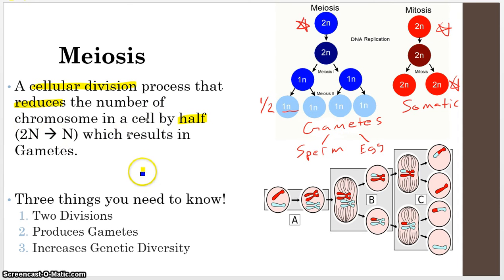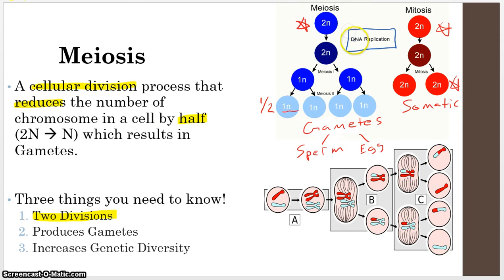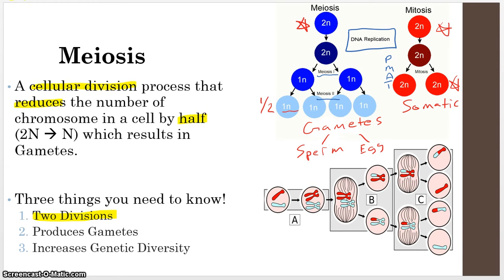There's a lot that goes into meiosis, but there are three key things to know. First, there are two divisions in meiosis, not just one. DNA replication happens first, then meiosis one, then meiosis two — each resembling mitosis with prophase, metaphase, anaphase, and telophase, but happening twice. Second, the purpose of meiosis is to produce gametes: men produce sperm and females produce eggs through meiosis.